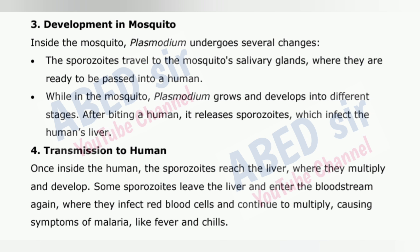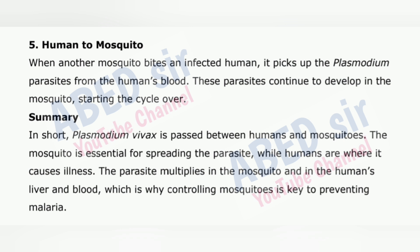4. Transmission to Human: Once inside the human, the sporozoites reach the liver where they multiply and develop. Some sporozoites leave the liver and enter the bloodstream again, where they infect red blood cells and continue to multiply, causing symptoms of malaria like fever and chills. 5. Human to Mosquito: When another mosquito bites an infected human, it picks up the Plasmodium parasites from the human's blood. These parasites continue to develop in the mosquito, starting the cycle over.